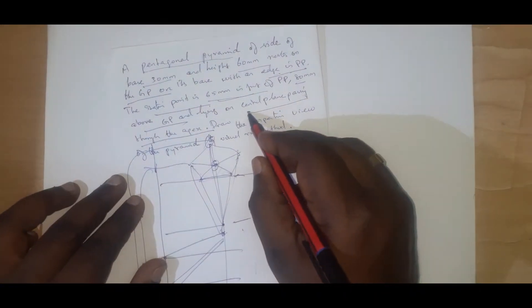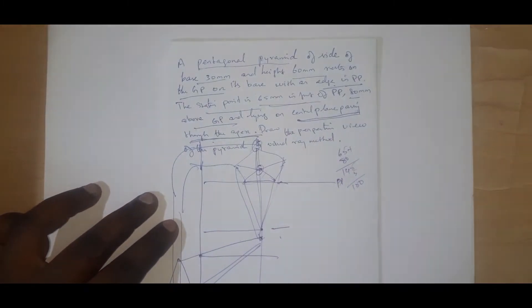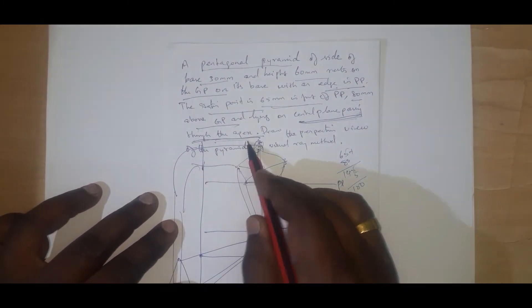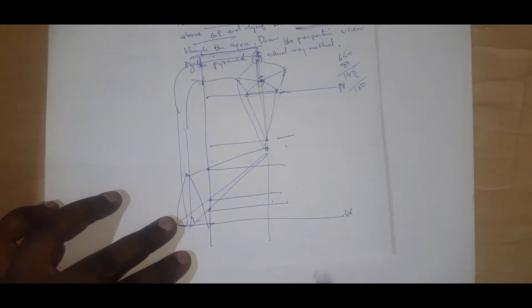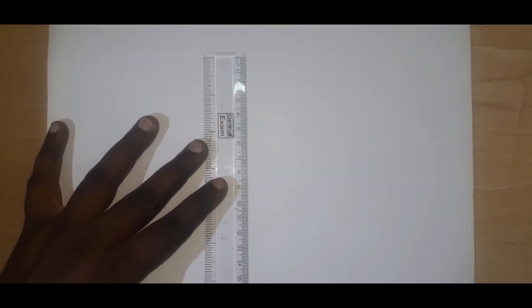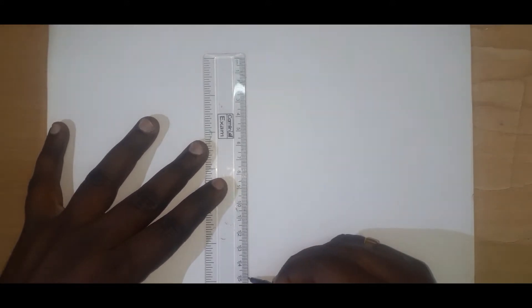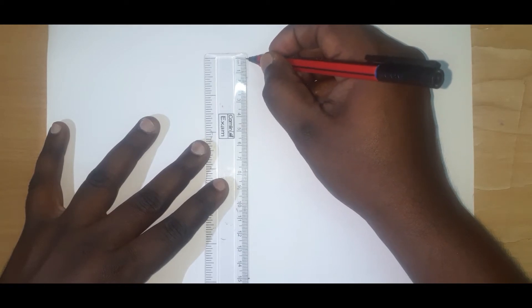Whenever the center plane is lying on the axis of the solid, we have to go for this method - we have to take the alternate picture plane method. That is the only procedure. We can now solve the problem, but before that we need to free up our drawing space.